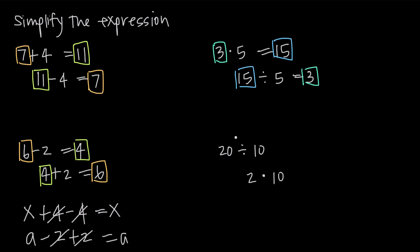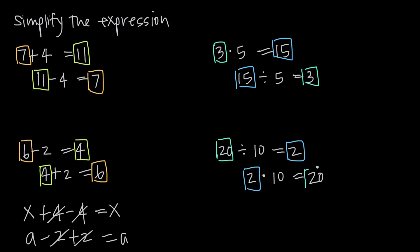We can also do this backwards and start with division. If we start with 20 and divide, 20 divided by 10 gives us 2. So we started with 20 and got to 2. But if we start with 2 and multiply by 10, we get back to 20. 2 times 10 is 20 — we get back to the same number.